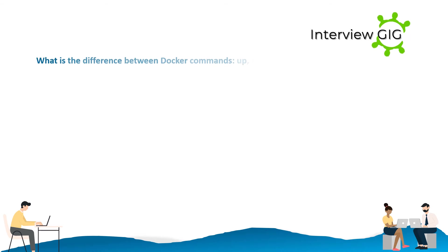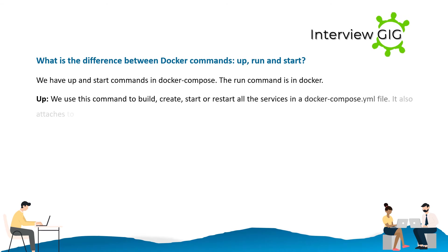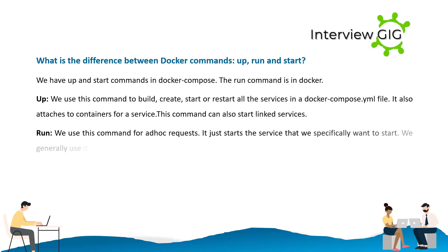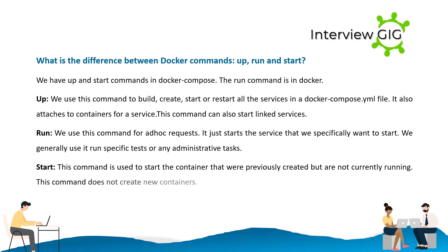What is the difference between Docker commands up, run, and start? Up and start commands are in Docker Compose; the run command is in Docker. Up — we use this command to build, create, start, or restart all the services in a docker-compose.yml file. It also attaches to containers for a service and can start linked services. Run — we use this command for ad hoc requests; it just starts the service that we specifically want to start. We generally use it to run specific tests or administrative tasks. Start — this command is used to start containers that were previously created but are not currently running. This command does not create new containers.